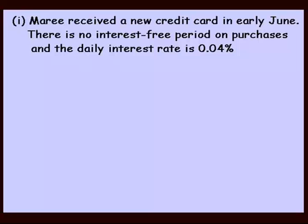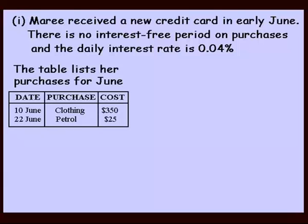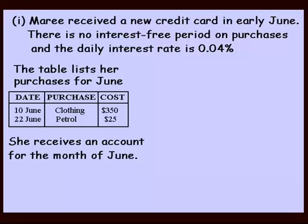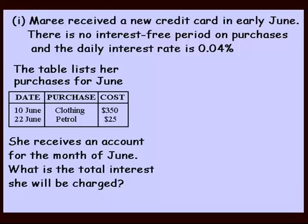Now in this example, we're told that Marie received a new credit card in early June. There is no interest-free period on purchases and a daily interest rate of 0.04%. This table lists her purchases for June. She receives an account for the month of June and we're asked, what is the total interest she will be charged? There's no interest-free period and the daily interest rate is 0.04%. So let's consider one item at a time.